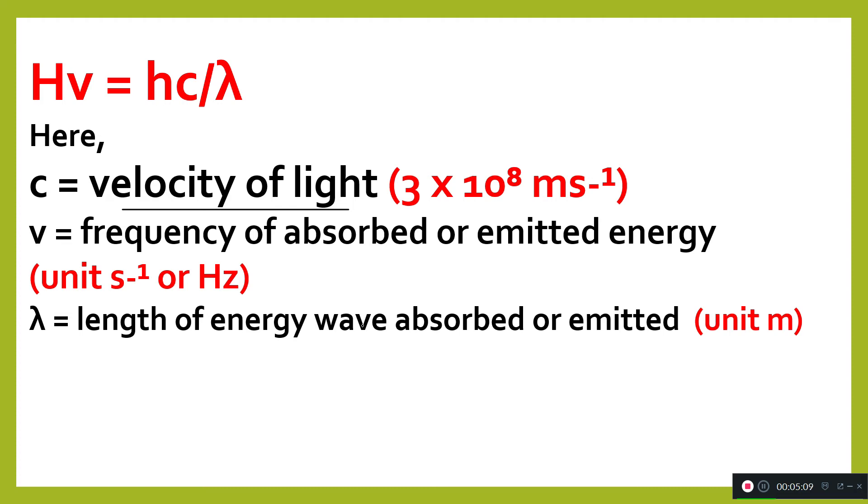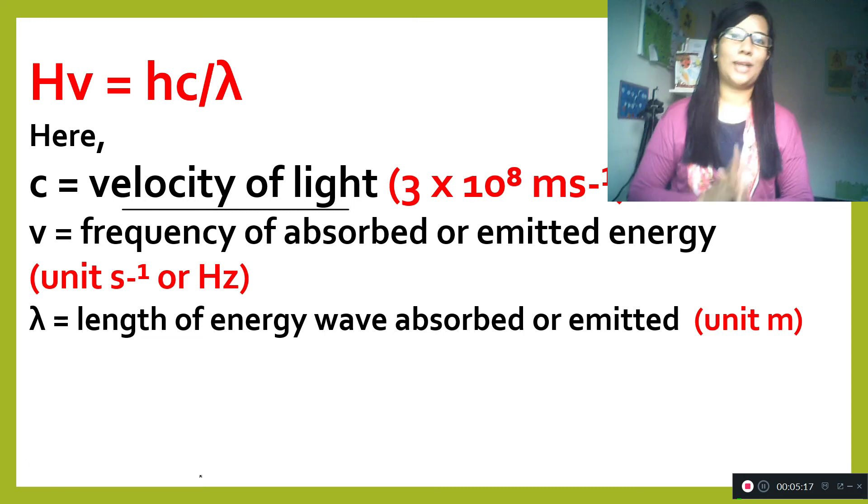The light emitted when an electron moves from higher energy level to lower energy level creates atomic spectra when driven through a prism.